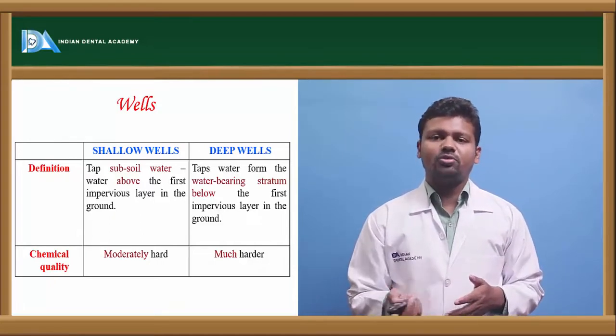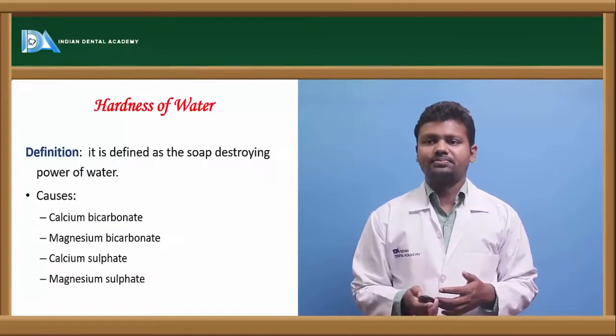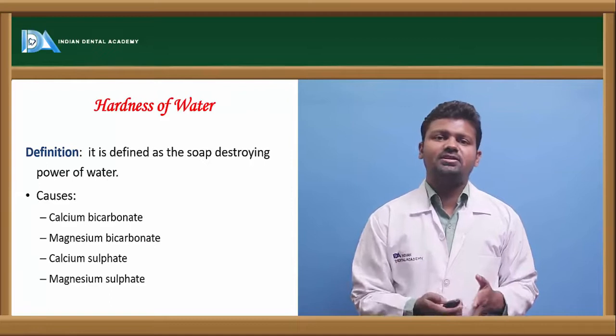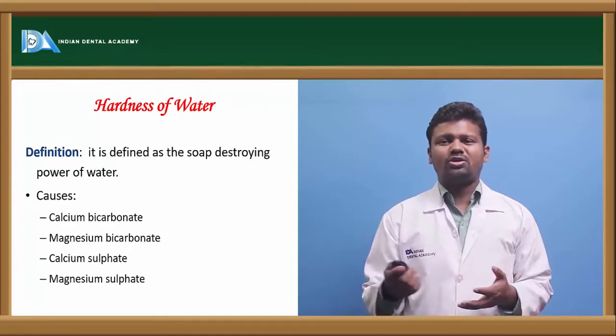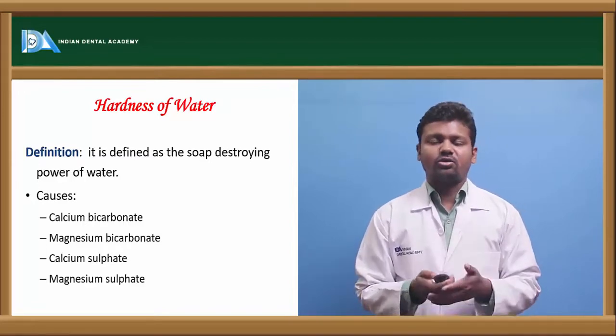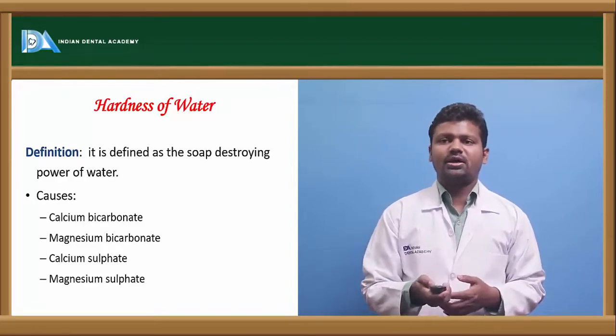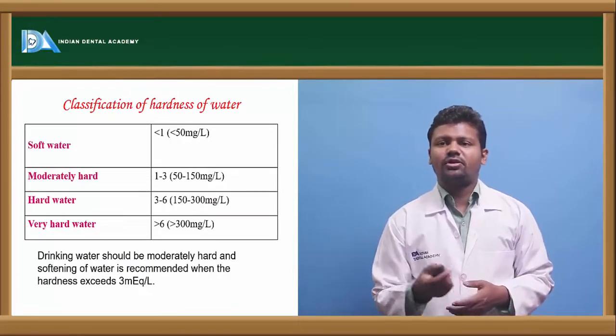Chemical quality - shallow wells water is moderately hard, deep wells water is much harder. Hardness of water can be defined as the one which has the destroying capacity of soap. Causes are calcium carbonate, calcium sulphate and magnesium sulphate - the water's hardness depends on these.